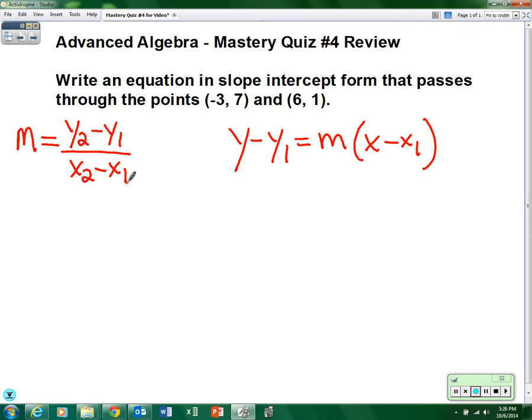Alright, so let's plug the numbers in and find our slope, just like on the last mastery quiz. This should be routine by now. So the slope equals... y₂ would be 1, y₁ would be 7, so 1 minus 7. x₂ would be 6, minus x₁ would be negative 3. Now remember that becomes a positive 3.